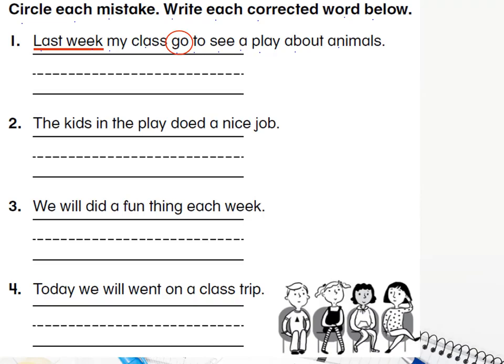Number two: 'The kids in the play do a nice job.' Is there anything called 'dued'? No, that's not correct. The mistake is using 'do' — we don't add '-ed' to 'do' to make it past tense. Instead, we say 'did.' So: 'The kids in the play did a nice job.'